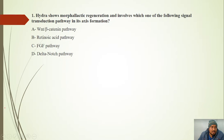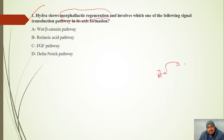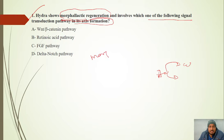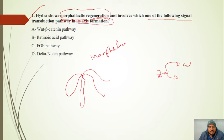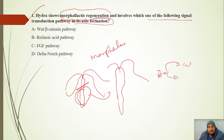For practice questions: The first question is about morphallactic regeneration — for example, in Hydra, when a body part is cut, the entire body regenerates. Which signalling transduction pathway is involved in axis formation during morphallactic regeneration? The answer is WNT beta-catenin signalling.